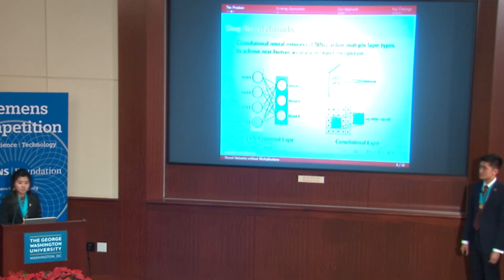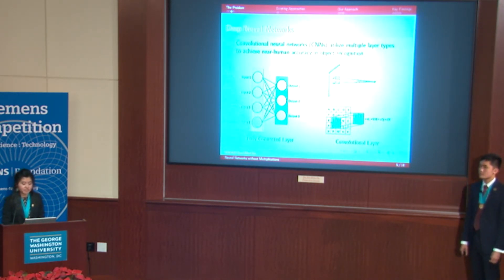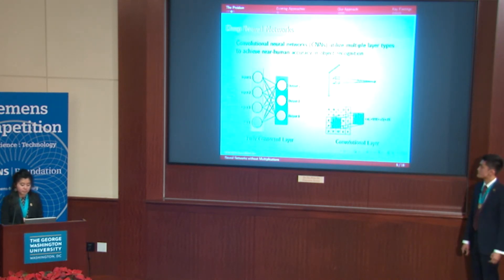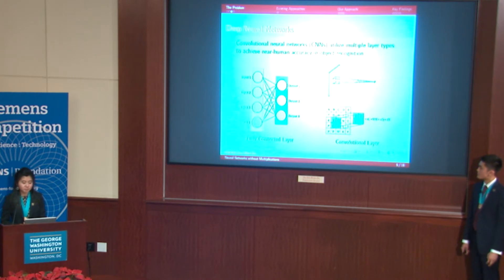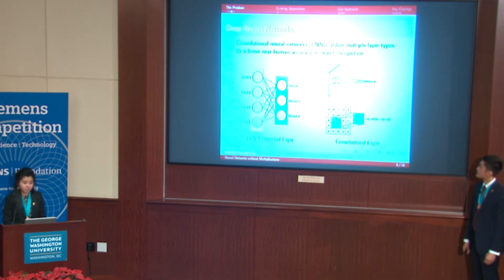We also have convolutional layers, which are responsible for enhancing object detection and classification by using learnable filters to extract high-order features from images. In convolution, a filter — also called the kernel — is shifted over the input in a regular manner, and the products between specific pairs of weight values and input values are computed and summed. These sums correspond to the output of the convolutional layer, and we can configure the dimensions of the output by adjusting parameters related to how the kernel is applied to the input. Linking multiple types of layers together allows deep neural networks to achieve near-human accuracy in object recognition.